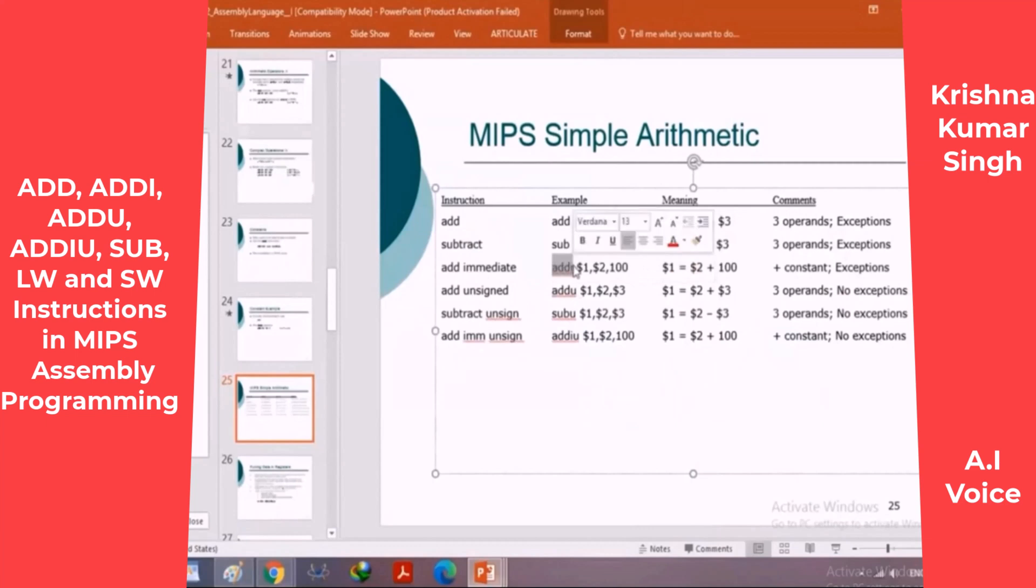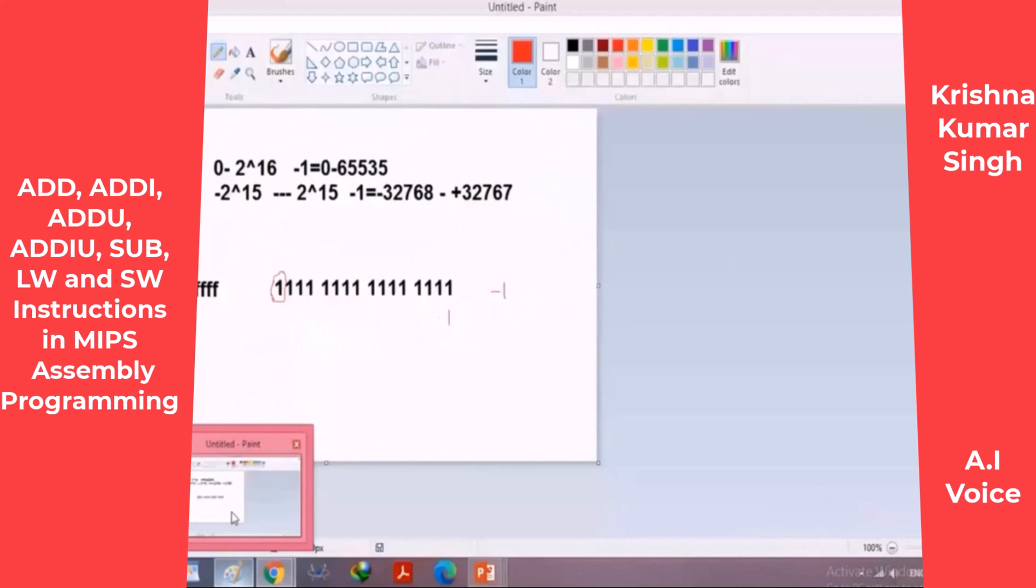If you use ADDIU (add immediate unsigned), it means that this number is 65,535. If you use ADDI, it means that it is a signed number, so it is minus 1. So you want to decrement one unit from your variable or your register.